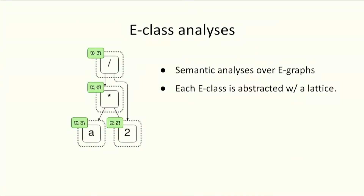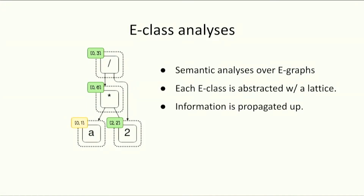Existing EQSat frameworks like egg use the so-called eClass analysis to support semantic analysis over eGraphs. It annotates each eClass with an abstract value. For example, we can attach to each eClass interval information, which denotes the possible ranges of the expressions. When analyses change, the changes are propagated up to analyses of their parent eClasses.